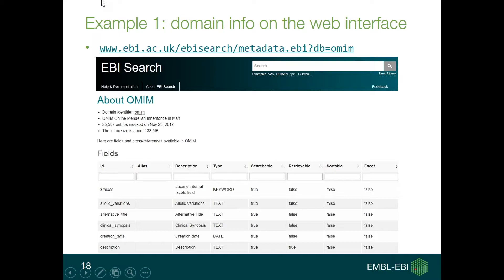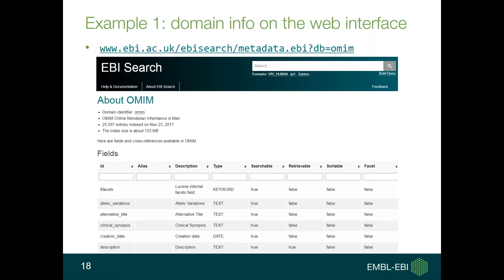For example, if you click on the web interface at that URL, you will see the metadata related to the OMIM database. You will see the number of entries available, when it was last indexed, and below there is a table with all the fields you can query — including ID and title, which will be used in a later example.